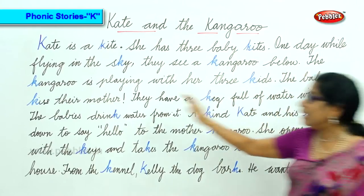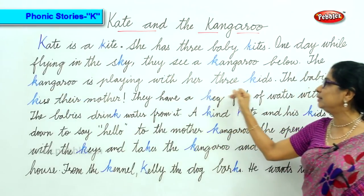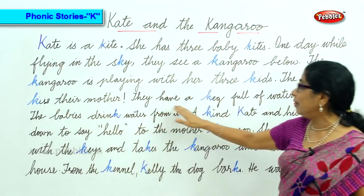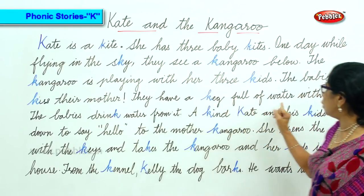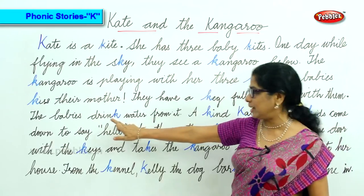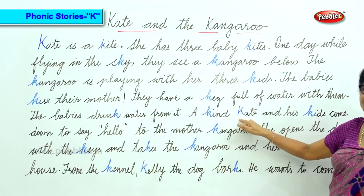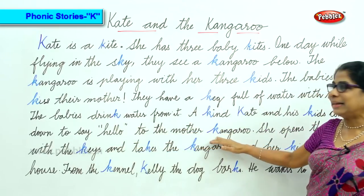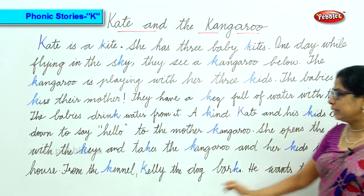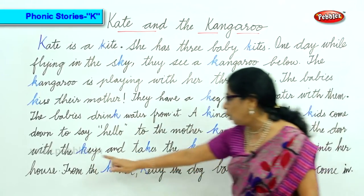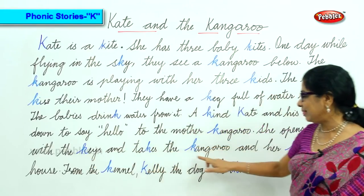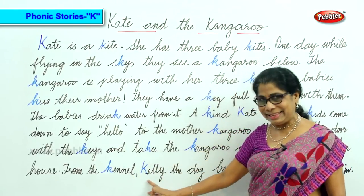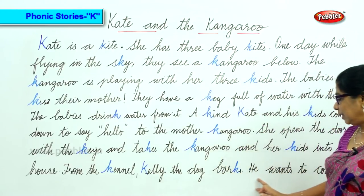Let's look at the words again. Kate is a little kite — kite is a kind of bird. She has three baby kites. One day while flying in the sky they see a kangaroo below. The kangaroo is playing with her three kids. The babies kiss the mother. They have a cake full of water. Kate and her kids come to say hello. She opens the door with the keys and takes them into her house. From the kennel, Kelly the dog barks.